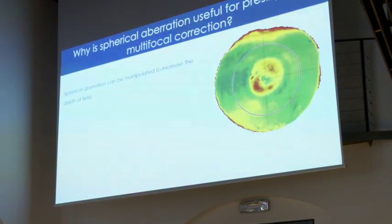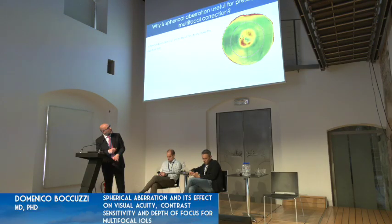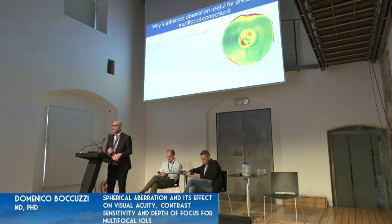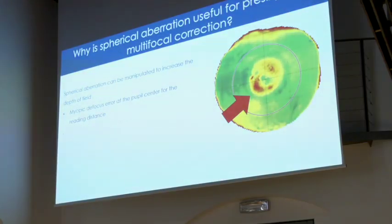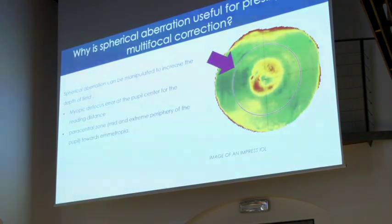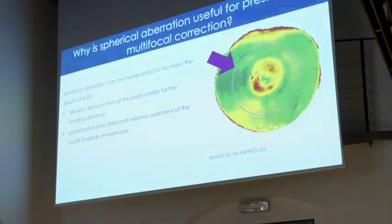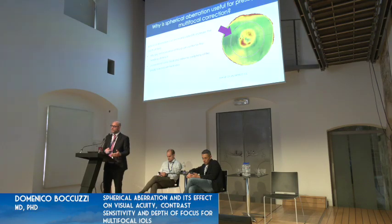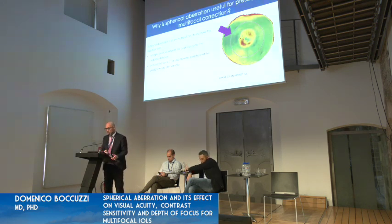Spherical aberration is useful for multifocal correction because we can manipulate it by creating new IOL shapes. For example, the HOYA Vivinex Impress IOL has a central hyperprolate area that creates a central myopic defocus at the pupil center and a hyperopic refractive error in the paracentral zone. When the pupil constricts during near vision, only the central area is active, providing negative refractive error for reading. When the pupil dilates, the larger area improves far distance vision.